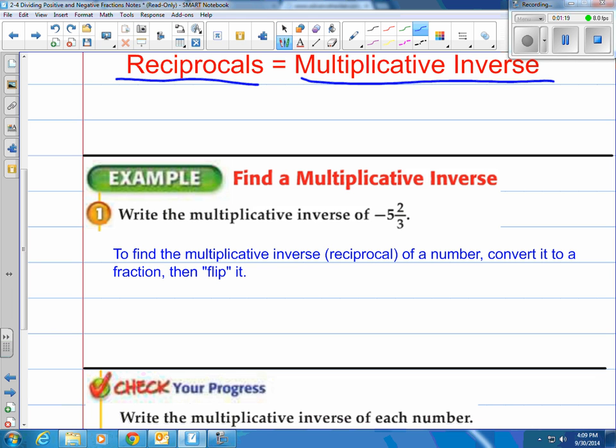So let's take a look at this number here. We have -5 and 2/3. That is not a fraction. I know you're looking at it going well there's a little fraction in there 2/3 but this is called a mixed number. We need to change it to a fraction first then flip it over. So let's change this to a fraction.